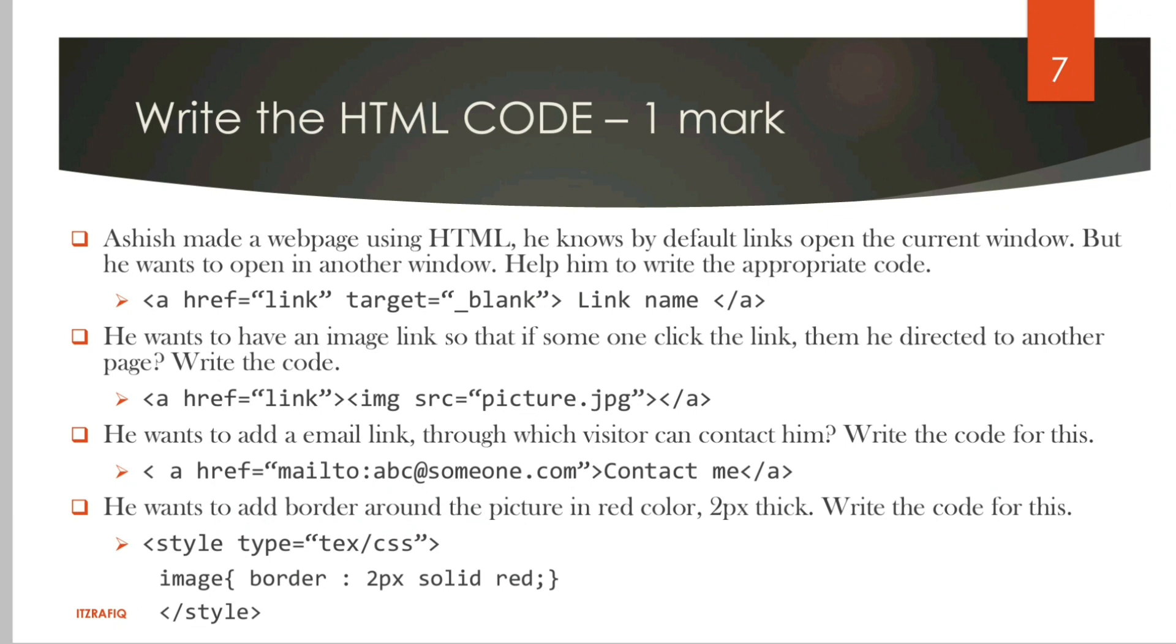Now write the HTML code. The first two came in HSLC examination 2020. There were five questions total, but three are from the omitted part due to syllabus reduction. First: to open a webpage in another window, use A HREF with target equals blank. To use an image as a link, place the IMG tag inside the A tag. To add an email link, use mailto. To add a border to an image, use this command.